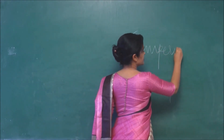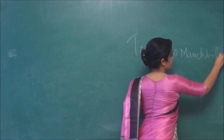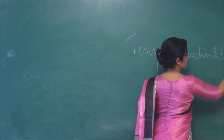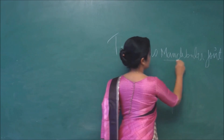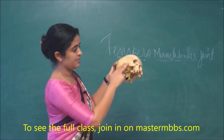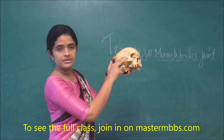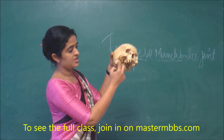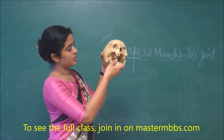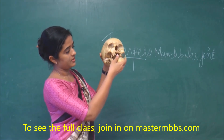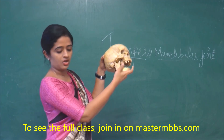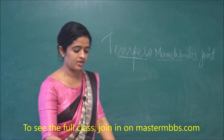Temporomandibular joint: 'temporal' refers to the temporal bone and 'mandibular' refers to the mandible. This is the temporal bone, this is the temporal fossa, and here you have the mandible. This joint between them is called the temporomandibular joint.